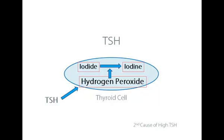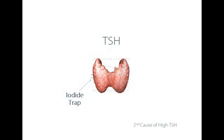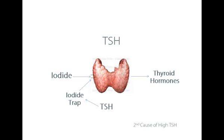Very simply, thyroid cells have in their membrane iodide traps — what are called sodium iodide symports or channels — that absorb iodide. TSH stimulates or upregulates these iodide traps so that iodide is absorbed and, once converted to iodine, it can be used to produce thyroid hormones.